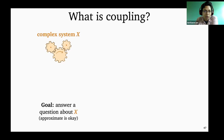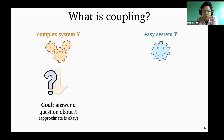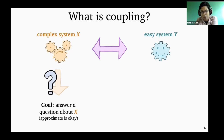We want to model them and answer some questions about the system. And given how complex they are, it's okay even if we have approximate answers. The way we are going to do this is come up with an easier system which hopefully we know how to answer questions about in closed form, and then couple these two systems together — typically by having a shared source of randomness, so having the same random events affect both systems.